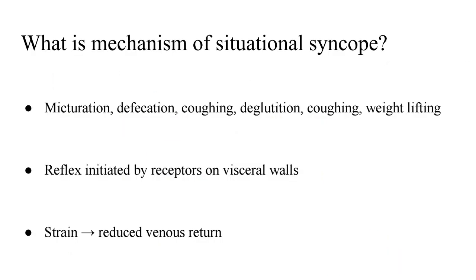After understanding neurocardiogenic syncope, let's talk about situational syncope, which is quite similar. Situational syncope is essentially a reproducible vasovagal syncope but with a known precipitant. Various situations like micturition, defecation, coughing, deglutition, or weightlifting can precipitate it. The reflex is usually initiated by receptors on visceral walls. Additionally, when there is straining during defecation, coughing, or weightlifting, there is additional reduced venous return, leading to a vasovagal pan-vagal response with a drop in blood pressure and heart rate.